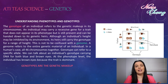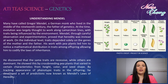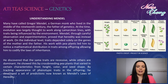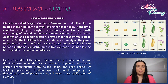An easy way to remember: genotypes are the genetic makeup. Many have called Gregor Mendel, a German monk who lived in the middle of the 19th century, the father of genetics. At the time, evolution was largely thought to work through traits being influenced by the environment. Mendel, through careful observation and experimentation, proved that heredity was instead at work — on an individual level, traits depended solely on the genes of the mother and the father. His work with pea plants led him to notice a mathematical distribution of traits among offspring, allowing him to codify the laws of inheritance. He discovered that some traits are recessive while others are dominant, shown by cross-breeding pea plants that varied in height, color, and seed shape. By tracking the appearance of phenotype traits in the offspring, he developed a set of predictions known as Mendel's Law of Heredity.